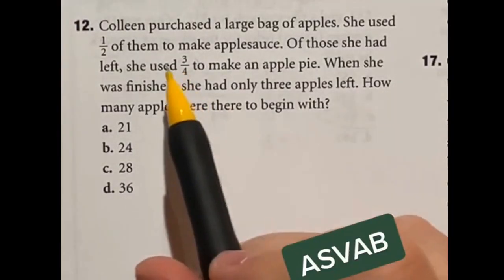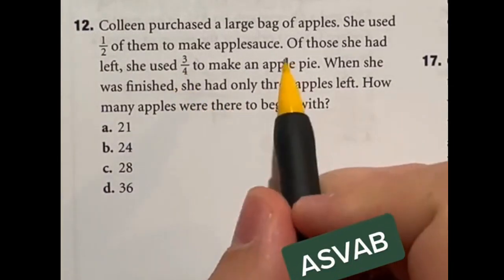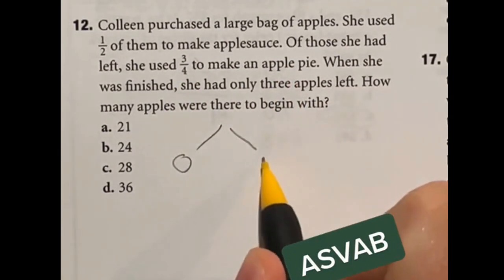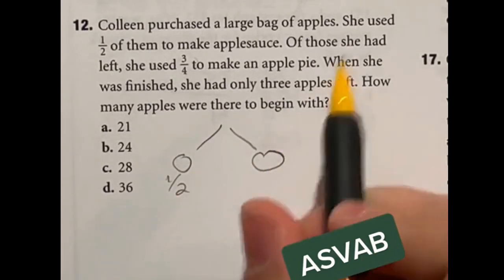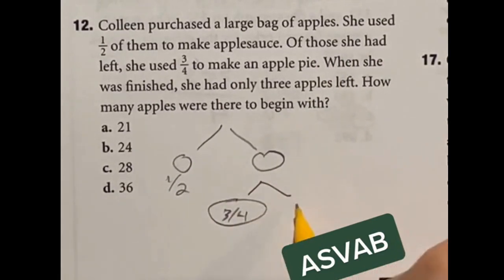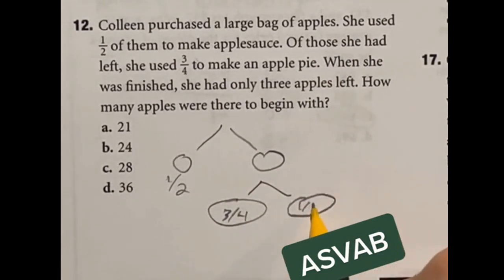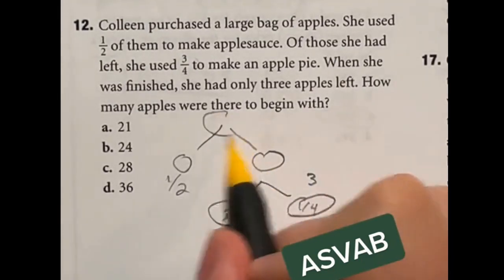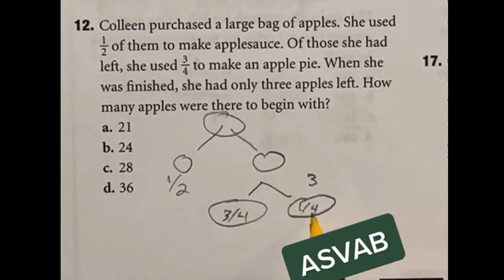So in this question Colleen had a bunch of apples. She used half of them to make applesauce and the other half she kept. So half of them is used and gone. Now from those that she had left she split into three fourths and then left over one fourth to use for apple pie. Now this one fourth that was left over ended up being three apples. So how many total apples did she start with?